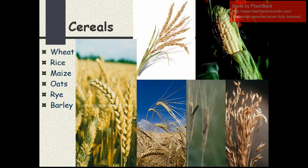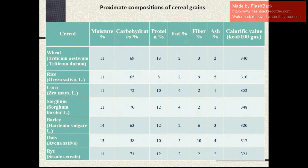The various cereals are wheat, rice, maize, oats, rye and barley. This is the proximate composition of the cereal grains. Proximate composition means moisture, carbohydrate, protein, fat, fiber, ash and the calorific value of the cereal grains. The protein content is more in sorghum and barley when compared to rice. The fiber content is more in oats and barley when compared to other grains. The calorific value of corn is 352 kilocalories per 100 grams and wheat contains 340 kilocalories per 100 grams.